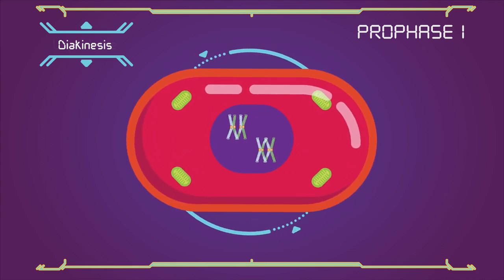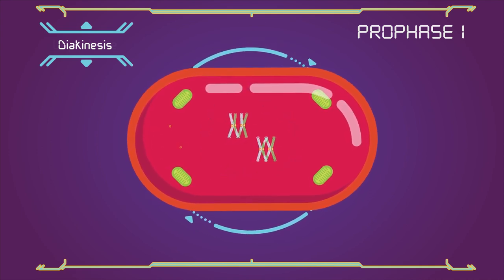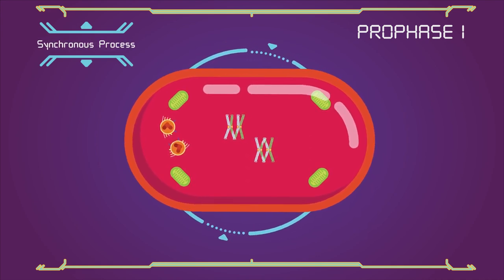The nucleoli disappear. The nuclear membrane disintegrates into vesicles, and the meiotic spindle begins to form. This is a synchronous process.